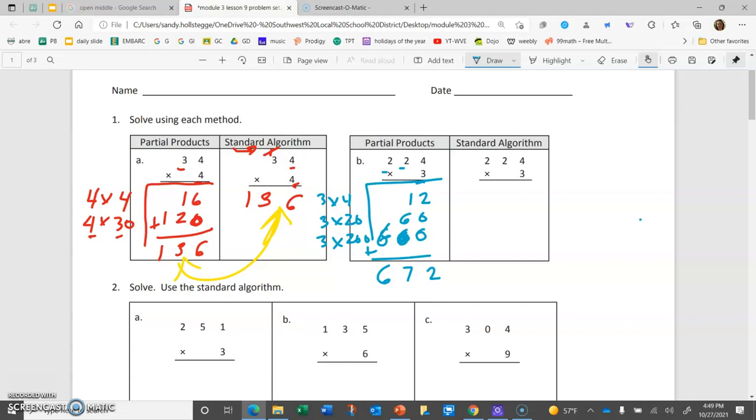We'll try to get that same answer using the standard algorithm. Remember, this time we will carry, instead of putting all the lines of information down below. So, we'll start with 3 times 4, which is 12. I write the 2, and I carry a 1 to the 10s place. I'll multiply 3 times the 2 10s. 3 times 2 10s is 6 10s. Plus one more 10 will be 7 10s. 3 times 2 100s. 3 times 2 is 6. So, 6 100s. Notice, same answer. Just takes up less space on the page.